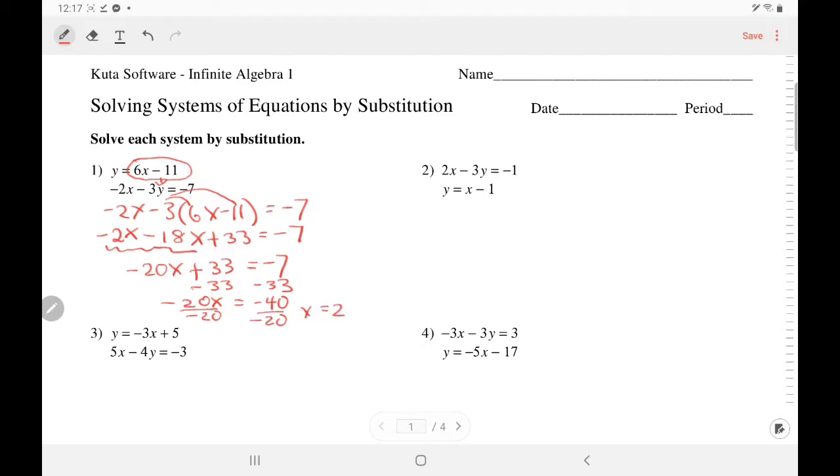Plug it back in to where you circled. That's why I circled it. So y equals 6, instead of x we're going to substitute 2 minus 11. So y equals 12 minus 11. Y equals 1. Present your answer 2, 1.